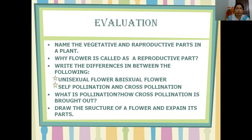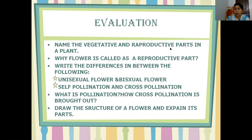Now we move to the last part of today's session: evaluation. First question — name the vegetative and reproductive parts in a plant. The vegetative parts are stem, roots, leaves, and branches. The reproductive part is the flower, because it has male and female organs.